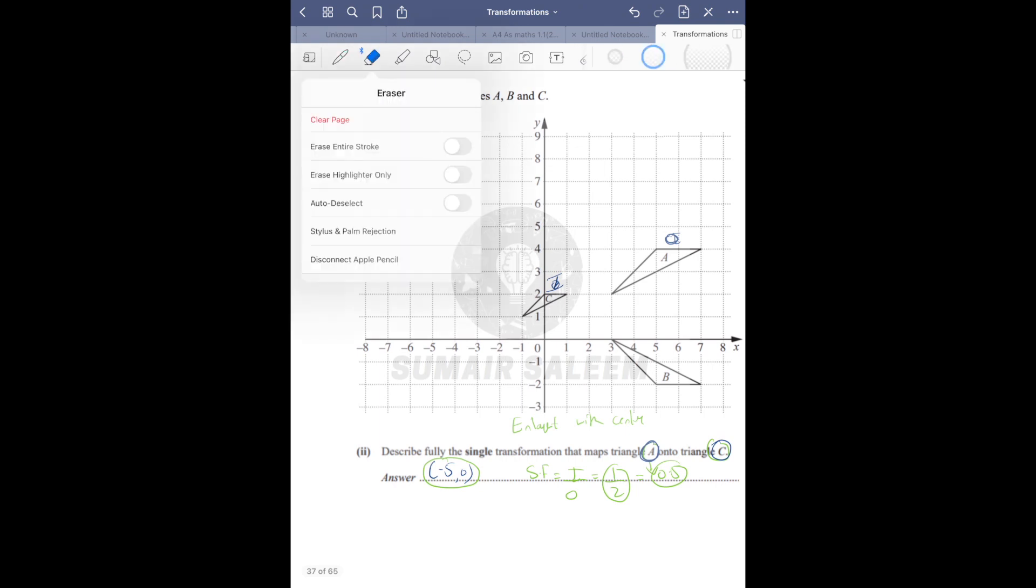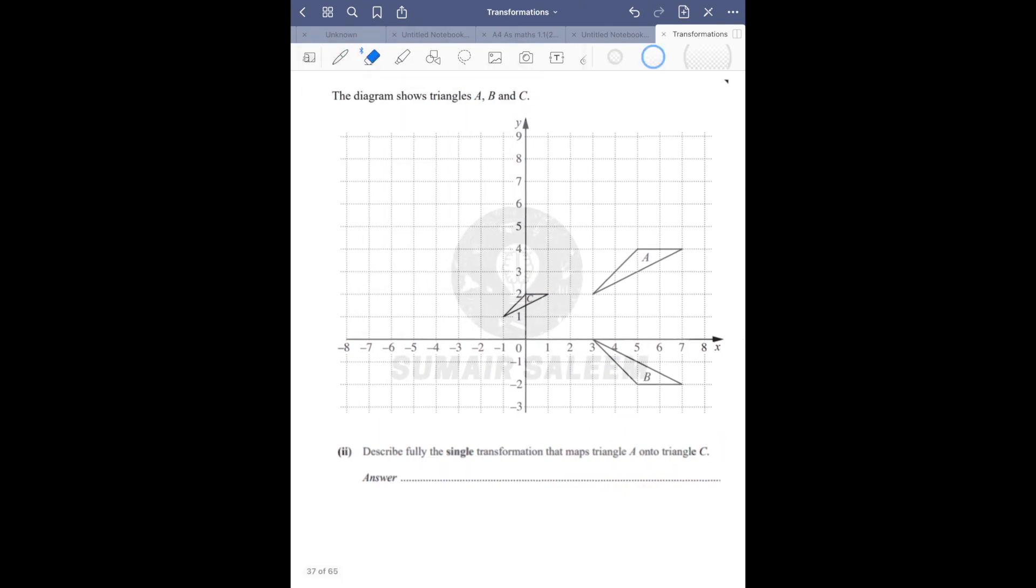Now see this one. Listen carefully. A onto C - A is object and C is image. You made this line, then you made this line. They all are meeting at minus 5,0.